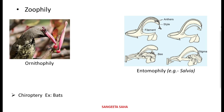Next is chiropterophily. In chiropterophily, the flowers are pollinated by bats. The bats hold on to freely exposed, large and tough flowers that open in the evening or night. Being nocturnal animals, bats transport the pollen over long distances. Next is malacophily, where the pollen grains are carried by snails.